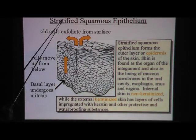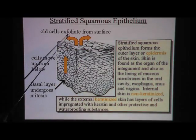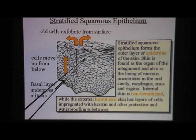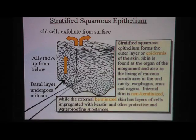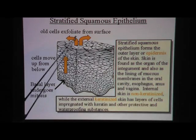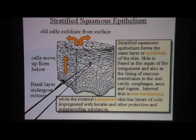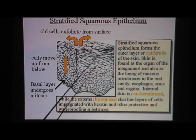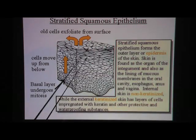Stratified squamous. Stratified means many layers. If you look at this, these dots are nuclei, and if you count, there are going to be like dozens of layers here. Squamous means the cells are squished — they're flat cells. In terms of location, this would be in the epidermis, which is the skin.